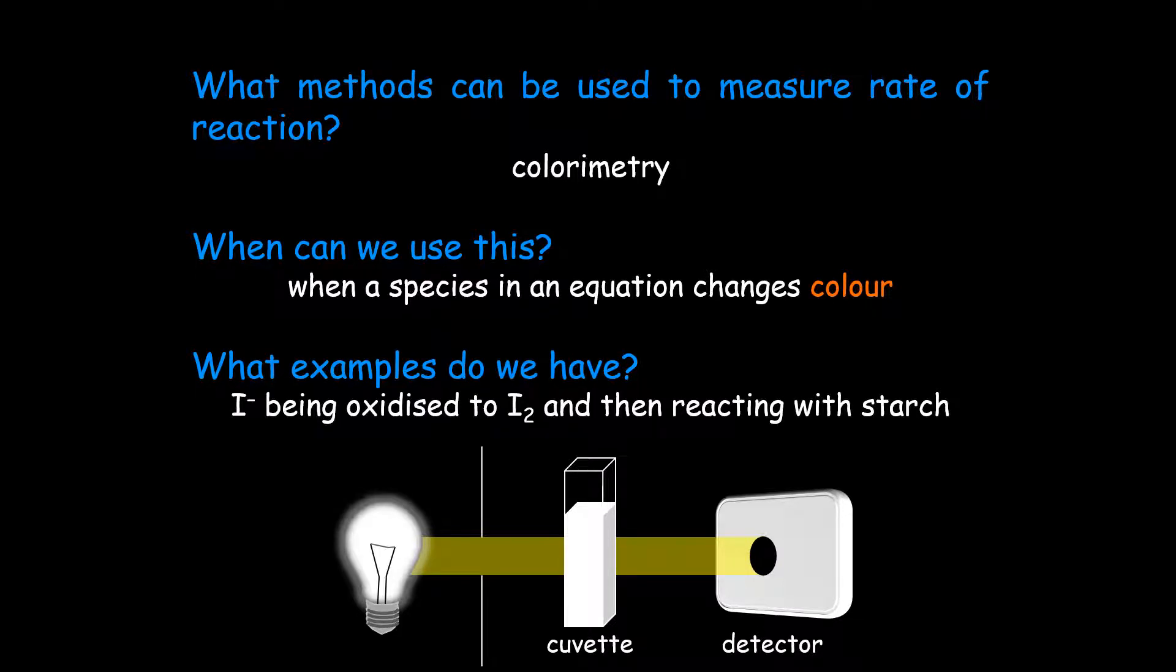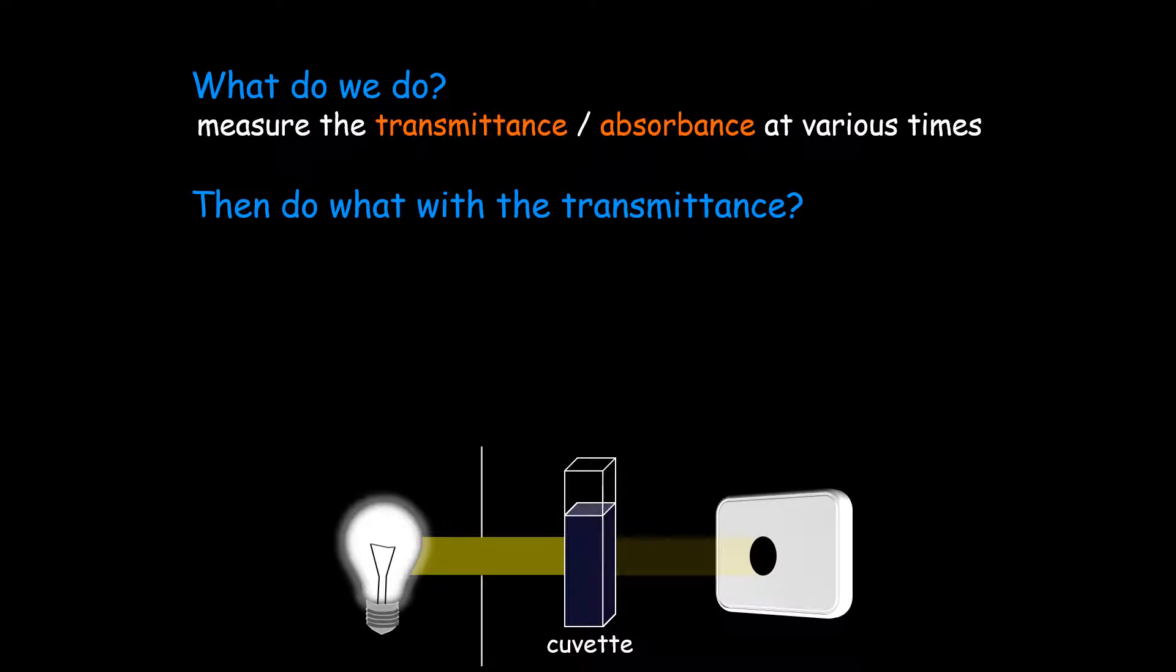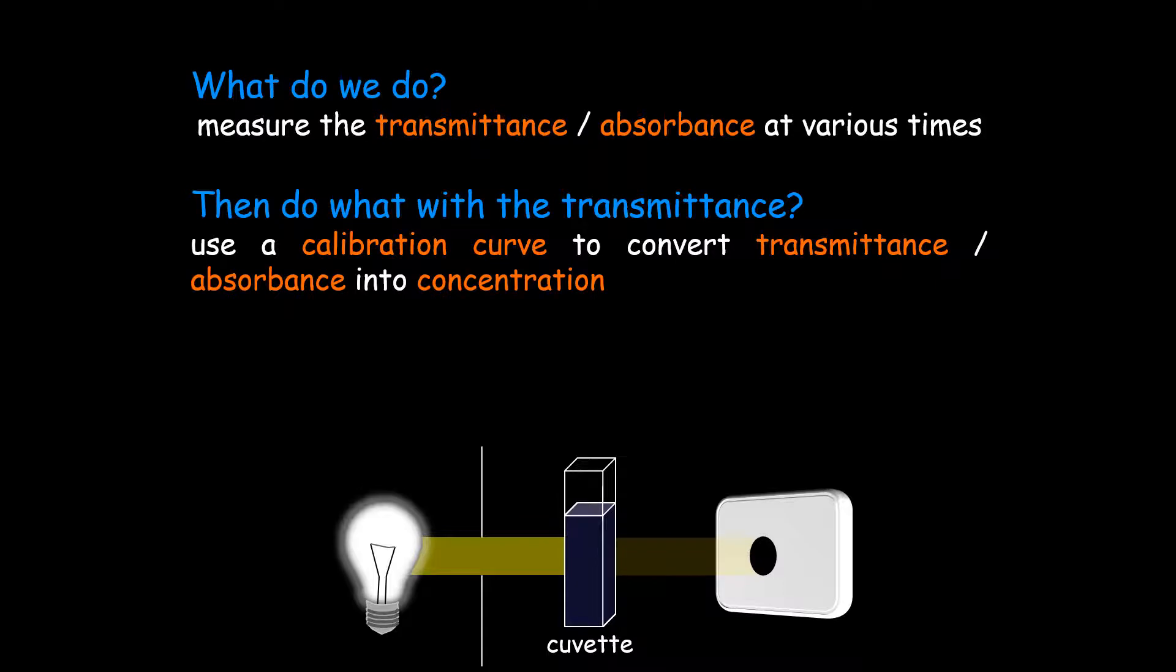Iodide being oxidized to form iodine and then reacting with starch makes the solution go from colorless to blue-black. We monitor the amount of transmittance, measure the transmittance or absorbance at various times, and use a calibration curve to convert transmittance or absorbance into concentration.